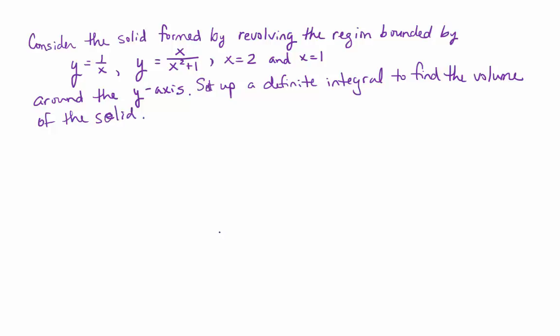Okay, so the first phase of these problems will always be to sketch a graph. I know basically what 1 over x looks like without having to do any work. I know what x equals 2 and x equals 1 look like, so let's start with those. And it has an asymptote here. It doesn't cross zero.